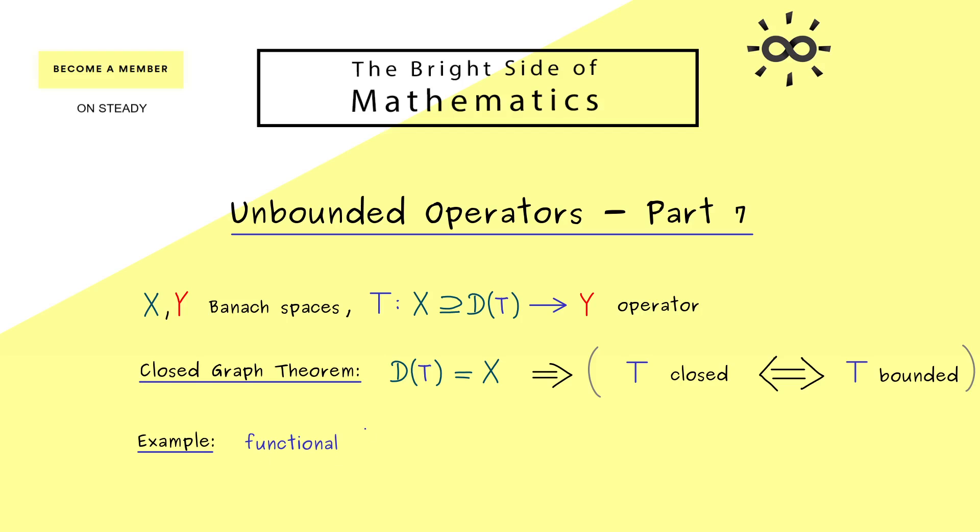And you might remember that we already considered an example of a functional defined on the Banach space. This means the space on the right hand side is given by the complex numbers or the real numbers. Indeed the explicit example we gave in part 5 can be generalized to any Banach space X.